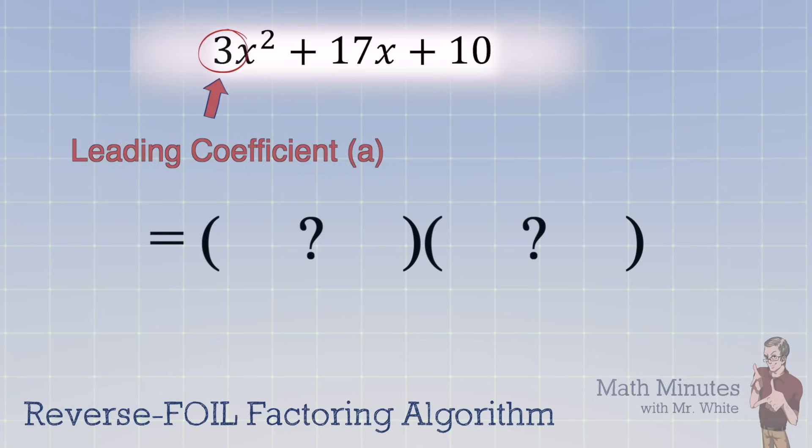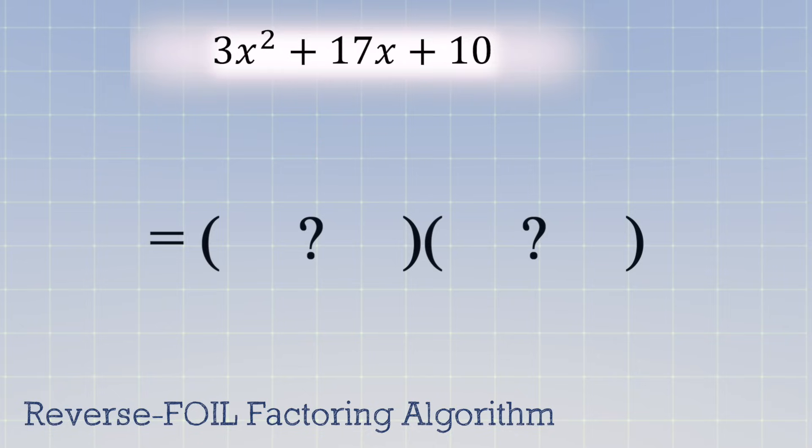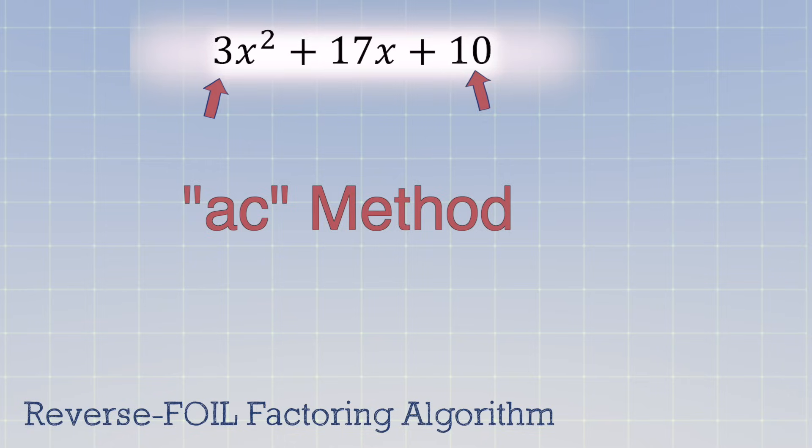Factoring trinomials where that leading coefficient is not 1, for example, here you see it's 3x², is a little more complicated to factor using guessing and checking. So there are some algorithms, but I'm going to show you one here. Some people call it the AC method. And here's how it goes.